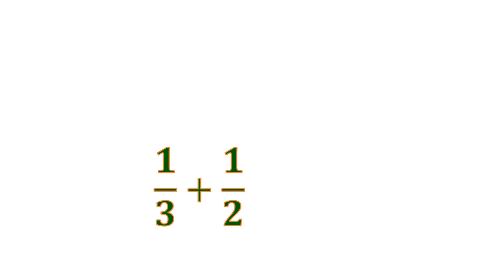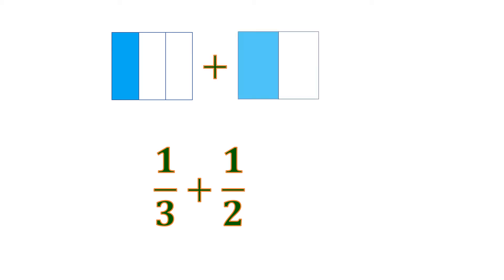Let's have another example. We have 1 third plus 1 half, and these are dissimilar fractions because they don't have the same denominator. Now let us visualize: 1 third is 1 shaded part out of 3, plus 1 half or 1 shaded part out of 2. This is harder than the previous examples because the two denominators, 3 and 2, are not multiples of each other.